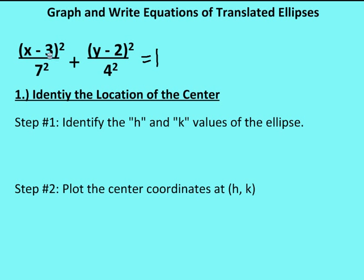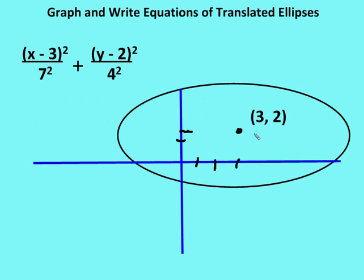We're given the equation: x minus 3 squared over 7 squared plus y minus 2 squared over 4 squared equals 1. We want to identify the coordinates for the center — those are the h and k values. In this case, h and k are 3 and 2, so the center is at (3, 2). I've already drawn the rough sketch of the ellipse with the center at (3, 2).